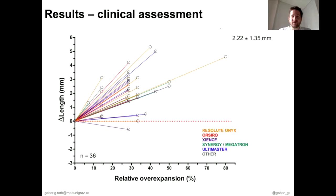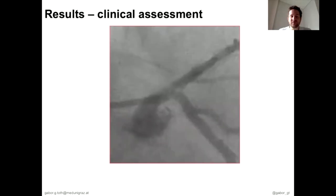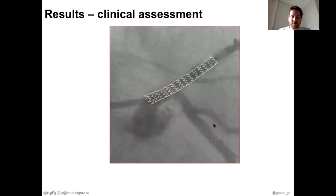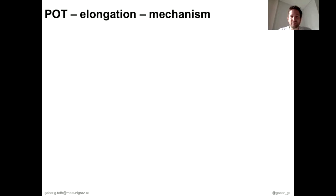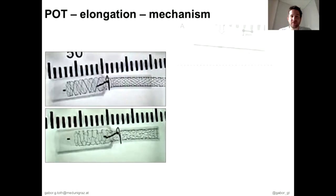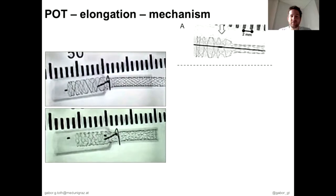From a clinical perspective, in a distal left main bifurcation case where the stent is placed and must be corrected proximally, if the stent is placed nicely to the ostium, POT may result in significant proximal aortic protrusion, as demonstrated by the yellow lines in our cohort data. Such protrusion might have relevant clinical and procedural consequences. Our observations suggest the elongation comes partially from the POT balloon itself.